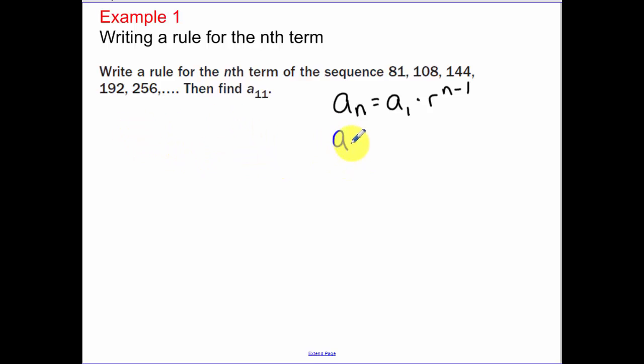So a sub-1, first term, is 81. What's our common ratio? To get from 81 to 108, I'm going to multiply by the common ratio. So let me do a little side math over here. 81 times the common ratio is going to equal 108. If you take and you divide 108 divided by 81, it's going to get you your common ratio. So if you take the second term divided by the first term, that gets us our common ratio, and that happens to be 4 thirds.